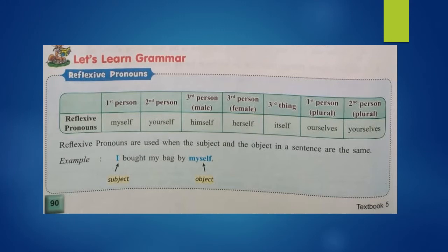Our first topic is reflexive pronouns. What are reflexive pronouns? Reflexive pronouns are used when the subject and the object in a sentence are the same. For example: I bought my bag by myself.